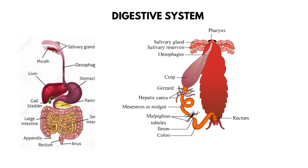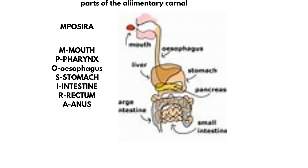Welcome to our first video on the digestive system. In this video, we're going to be looking at the system in charge of digestion in living organisms. Digestion is the process of breaking down complex food materials into a simpler form for absorption. The part that runs from the mouth to the anus is called the alimentary canal or digestive tract. To remember all the parts involved, we use the word IMPOSTERA: M for mouth, P for pharynx, O for esophagus, S for stomach, I for intestine, R for rectum, and A for anus.